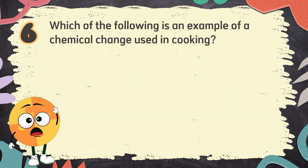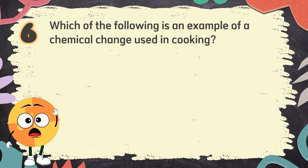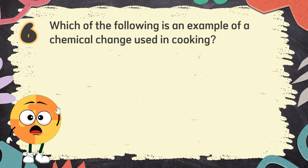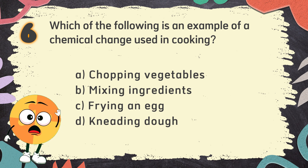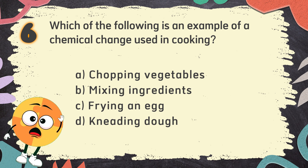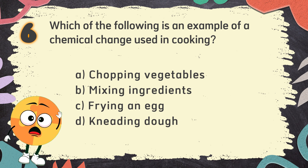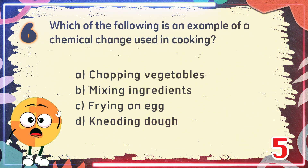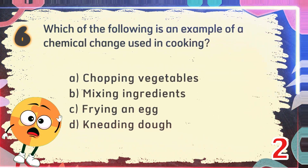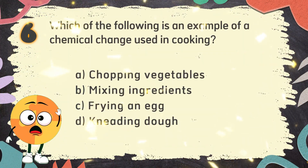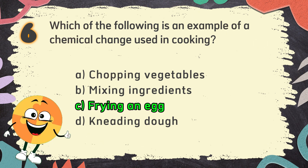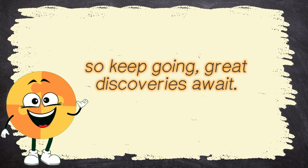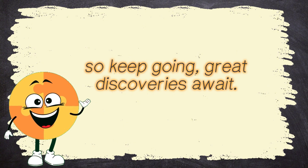Number 6. Which of the following is an example of a chemical change used in cooking? The choices are: A. Chopping vegetables, B. Mixing ingredients, C. Frying an egg, D. Kneading dough. The correct answer is C. Frying an egg. You're a science superstar! You've made it this far, so keep going! Great discoveries await! Let's continue!